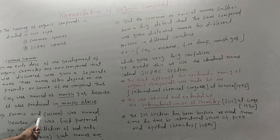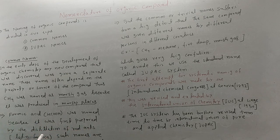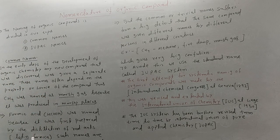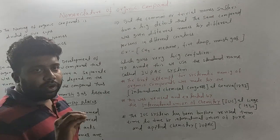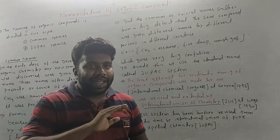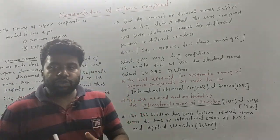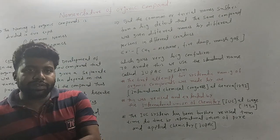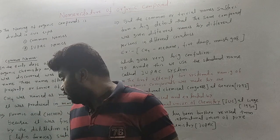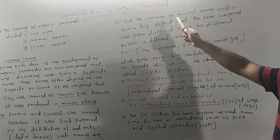Similarly, formic acid (HCOOH) was first prepared by the distillation of red ants. Such names, derived from properties or sources, are called common names, also known as trivial names.